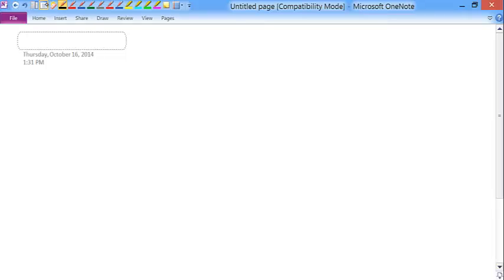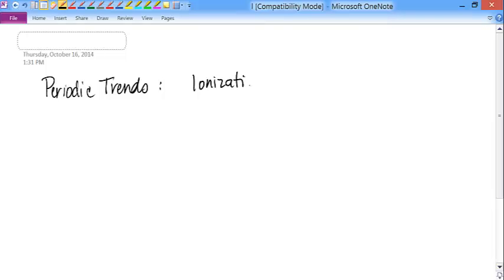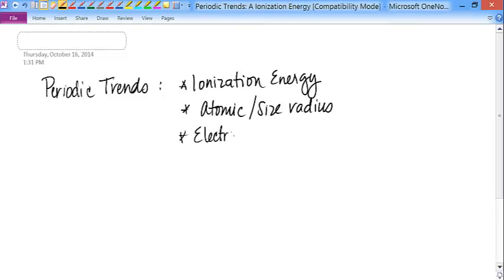Okay, so the last part of the chapter that you guys read about were periodic trends. And periodic trends include various things like ionization energy, which we mentioned in the context of photoemission spectroscopy. The amount of energy it takes to remove an electron from a gaseous atom.